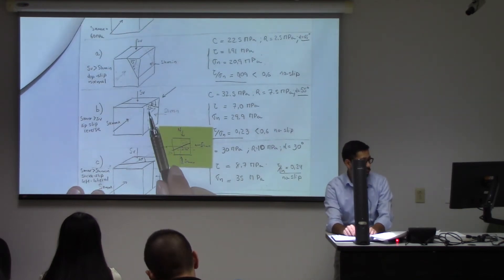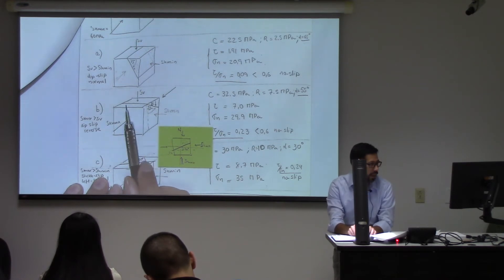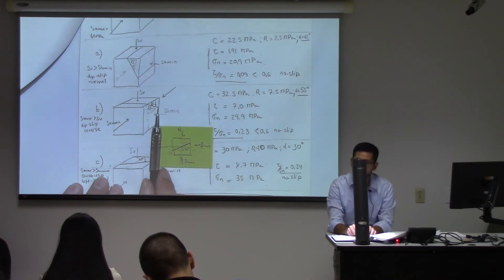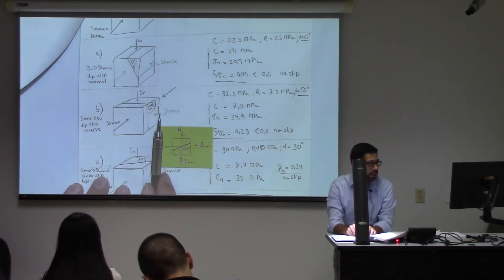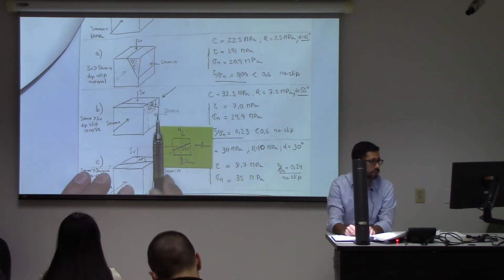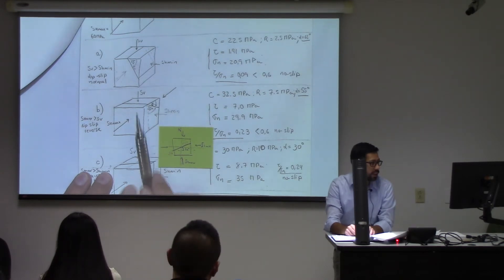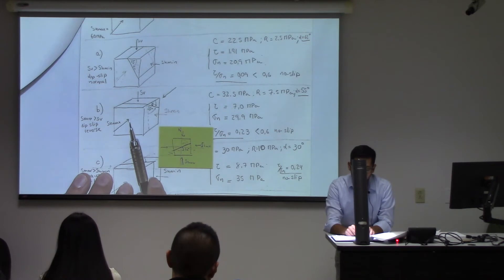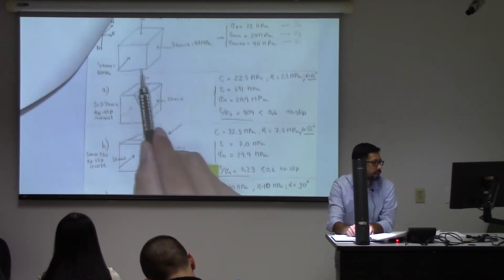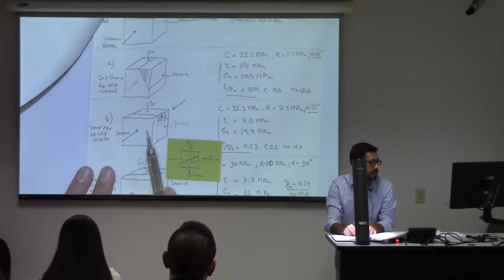The next case has a fault with a strike east-west — so this is the line — and dip 35 degrees. Notice now that SH min doesn't play any role in making this block move. If it were to move, you just need SV and SH max. Which is the largest between SH max and SV? In this case, SH max is 60 and SV is 45, so it's SH max.